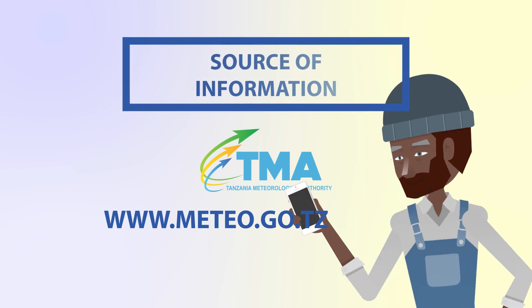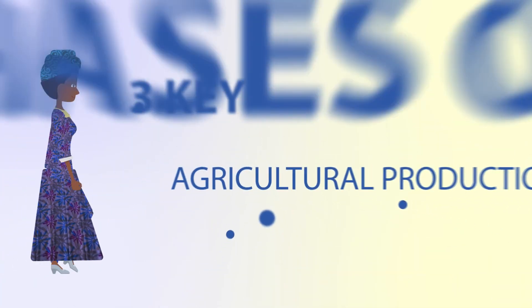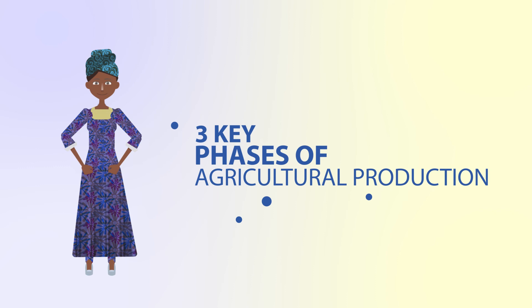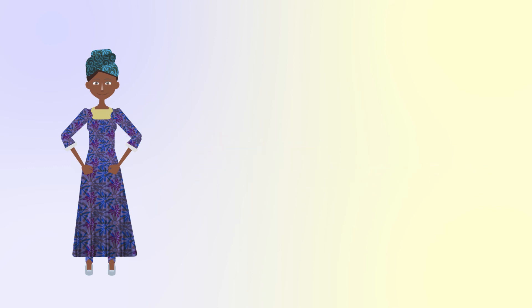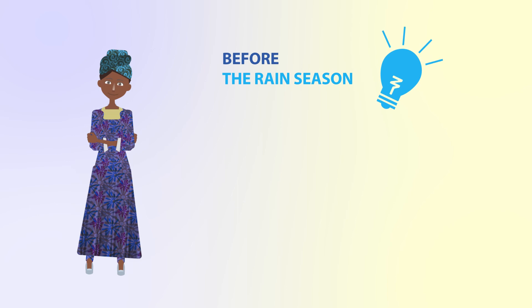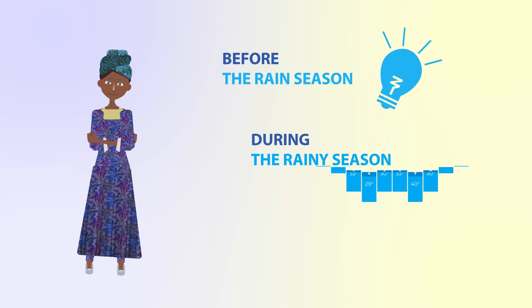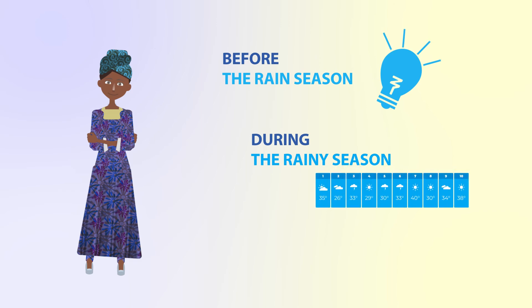The three key areas of agricultural production phases where agrometeorological information and advisory is required are: before the rain season, when farmers make decisions and preparations for the upcoming agricultural season; and during the rainy season, when 10-day and daily bulletins inform operational decisions like timing for weeding, applying fertilizer, mulching, rainwater harvesting, and disaster and risk reduction actions.